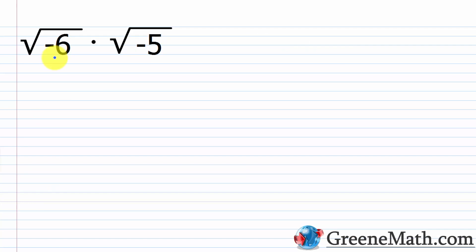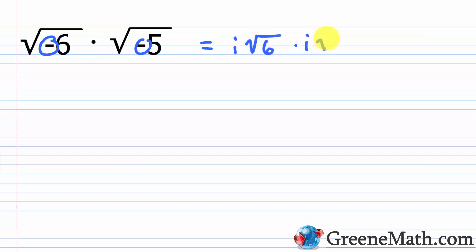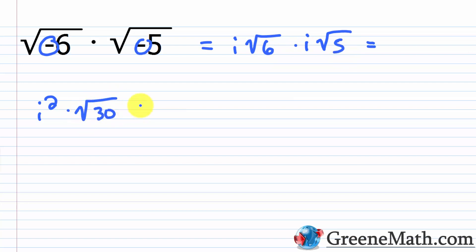Let's look at another example: the square root of negative 6 times the square root of negative 5. Again, because we have two negative radicands, we pull out the negative from each: i times the square root of 6, multiplied by i times the square root of 5. Then i times i is i squared, and the square root of 6 times the square root of 5 is the square root of 30. Since i squared equals negative 1, this gives negative square root of 30.